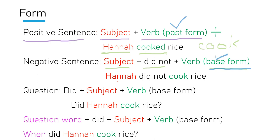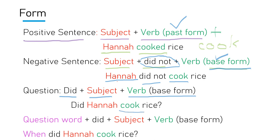In negative sentences, we use the base form of the verb, but we add 'did not' before it. For example, Hannah did not cook rice — Hannah is the subject, did not is added, and cook is the base form of the verb. For question form, we bring 'did' to the beginning, then subject, then base form of the verb. For example: Did Hannah cook rice? Notice that cook is the base form; the past form of cook is cooked.